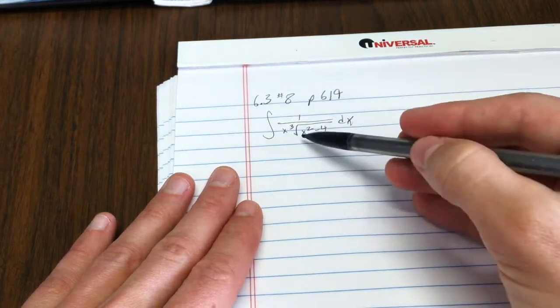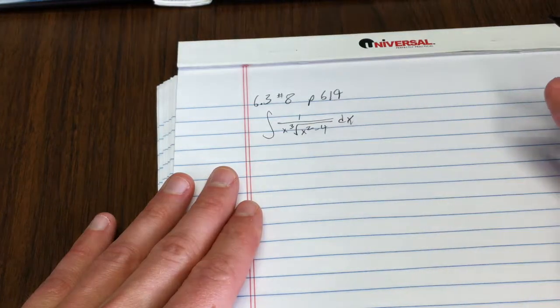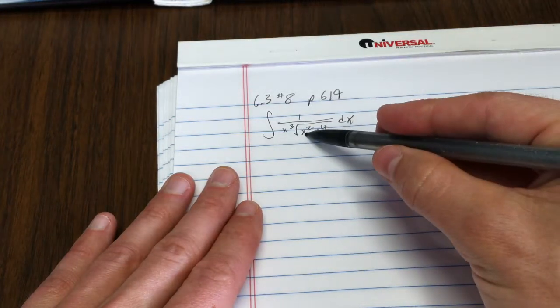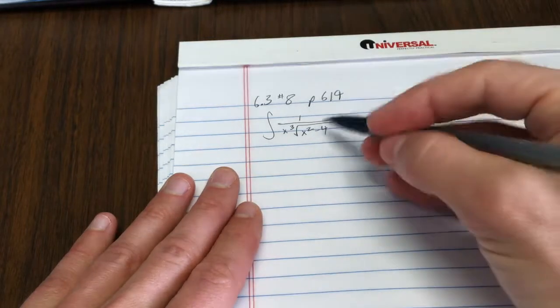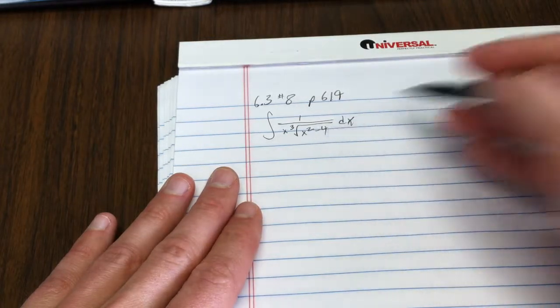You notice it has that telltale sign, the square root of the difference of two perfect squares. Now since this is an x squared minus 4 squared,